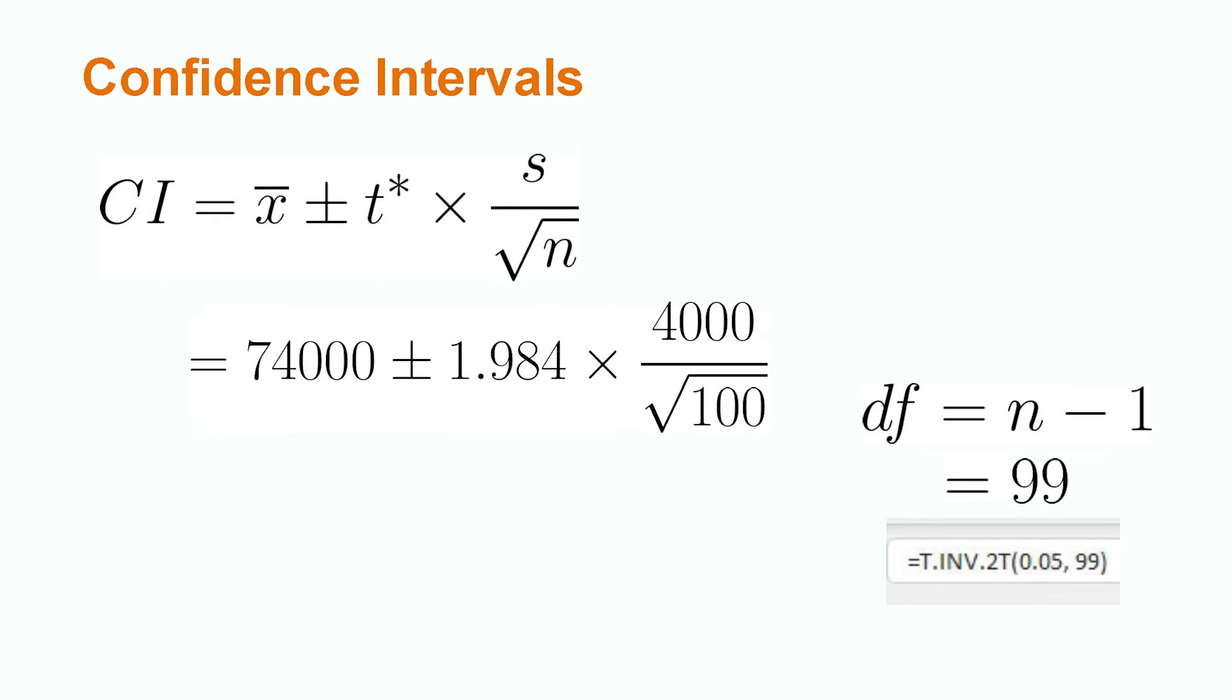We can now plug in all necessary values into our formula. When we multiply the value of t* by the value of s over the square root of n, this is called the margin of error. We now subtract the margin of error from the mean to get our lower interval and add the margin of error to the mean to get our upper interval.